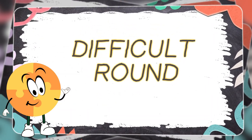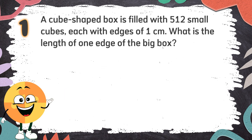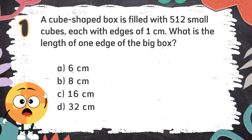Difficult Round. Number 1: A cube-shaped box is filled with 512 small cubes, each with edges of 1 centimeter. What is the length of one edge of the big box? The choices are: A. 6 centimeters, B. 8 centimeters, C. 16 centimeters, D. 32 centimeters.